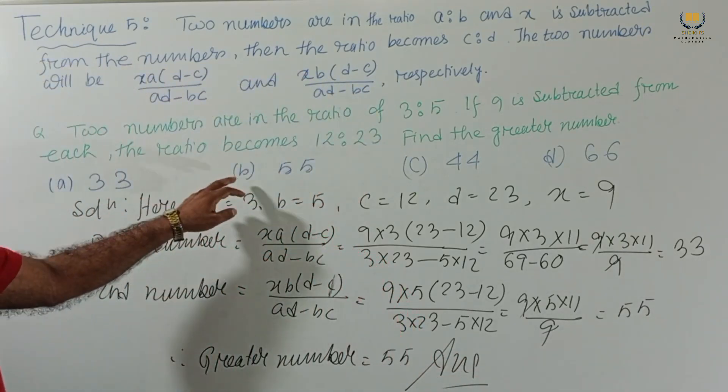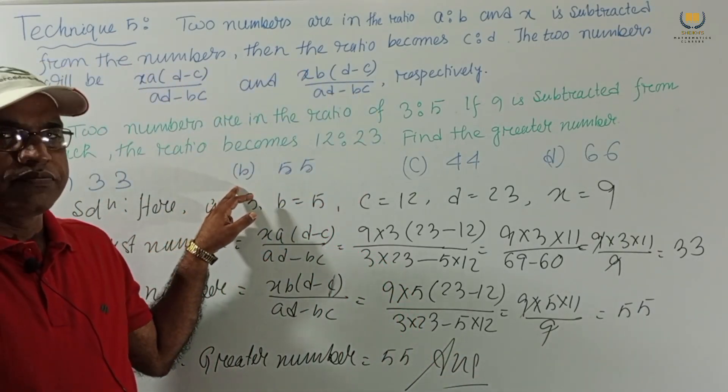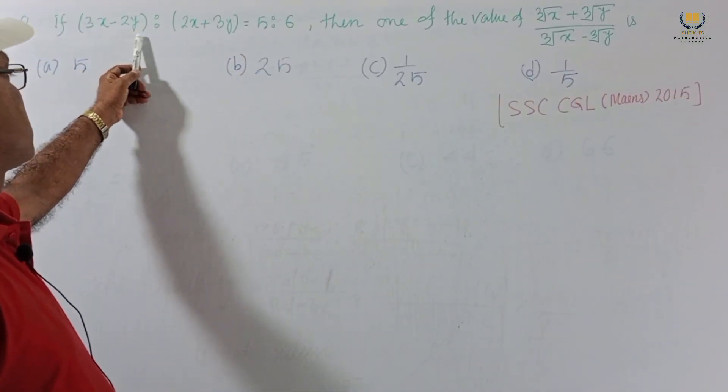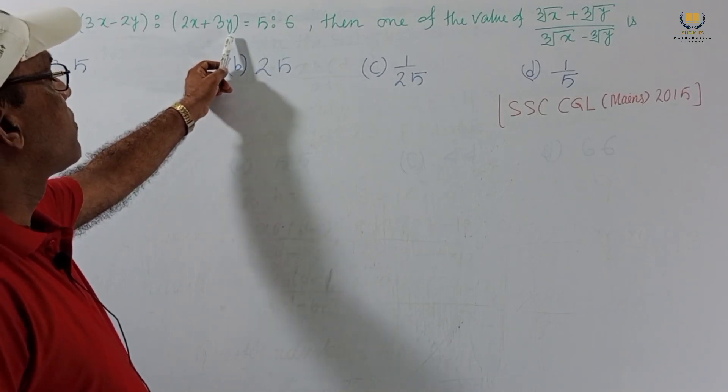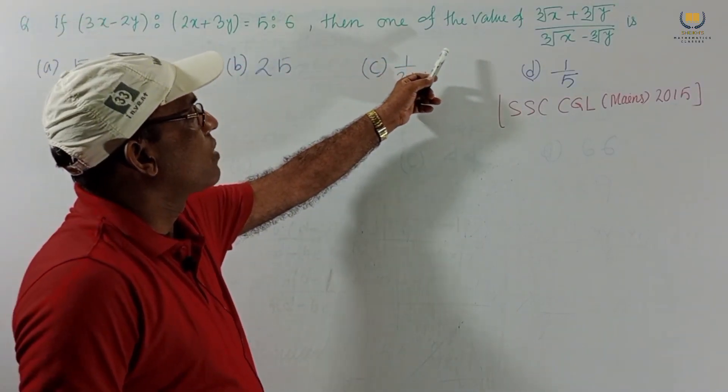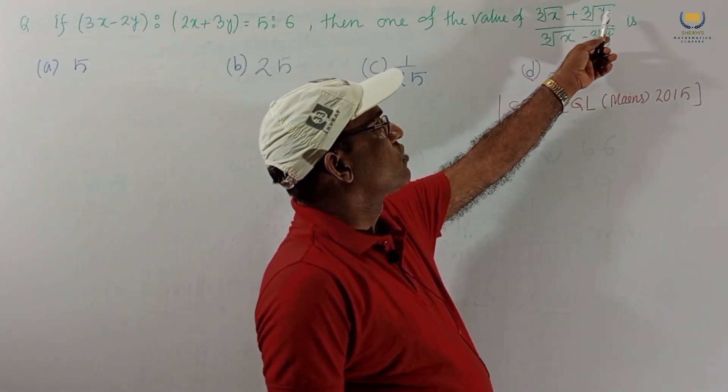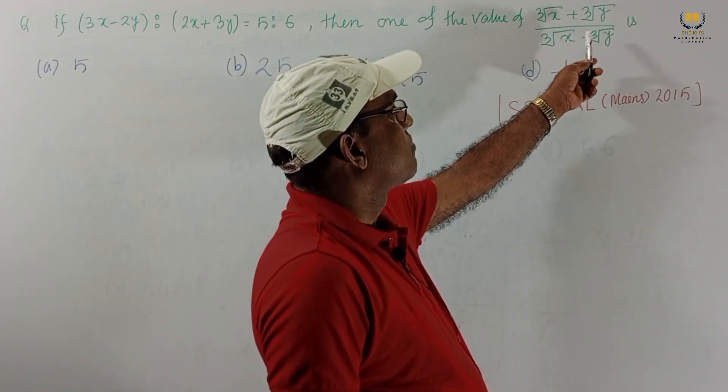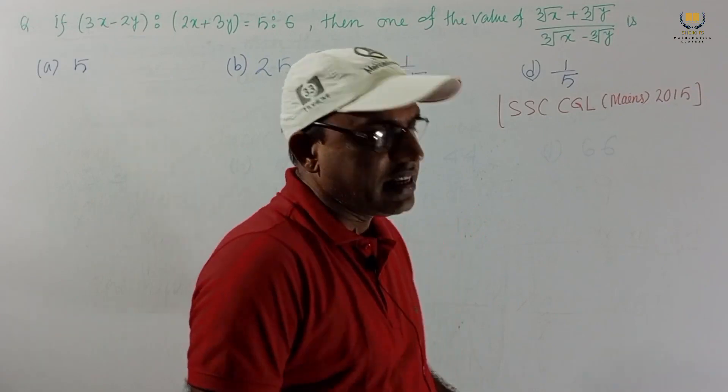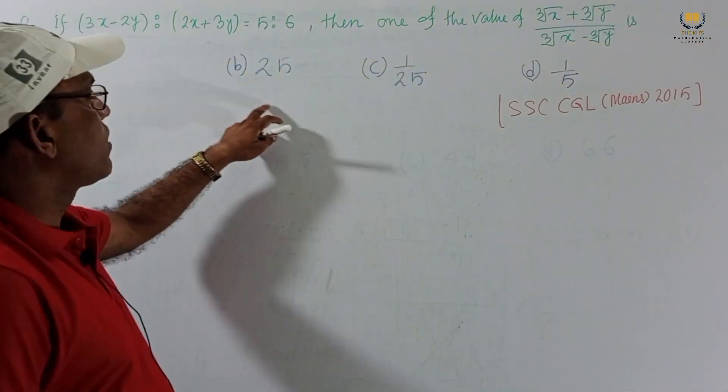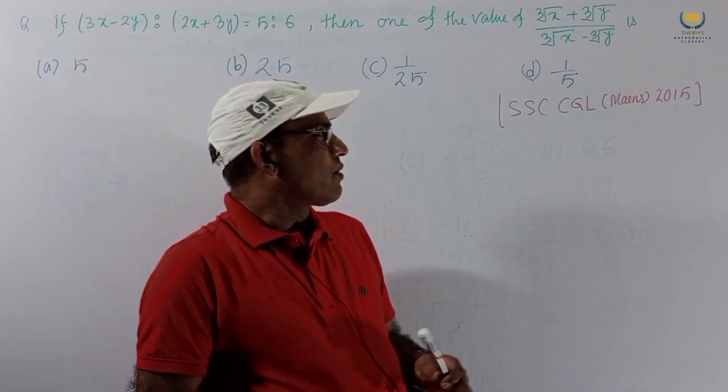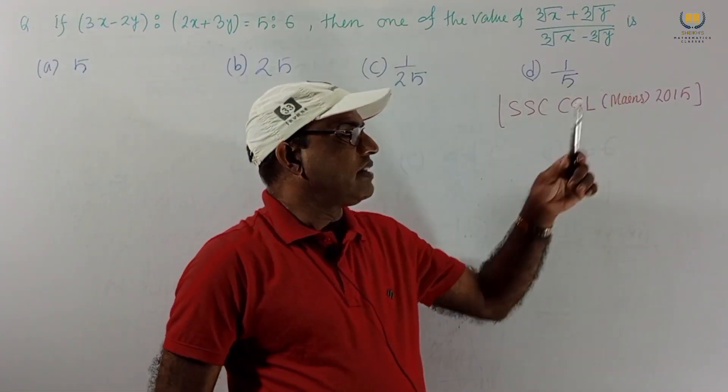There is another problem. If (5x-2y) is to (2x+3y) equal to 5:6 then one of the value of (cube root of x + cube root of y) divided by (cube root of x - cube root of y) is: 5, 25, 1/25, 1/5. It was asked in SSC CGL 2015.